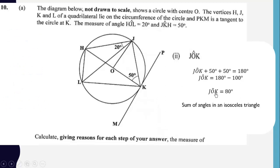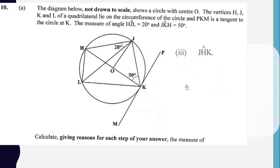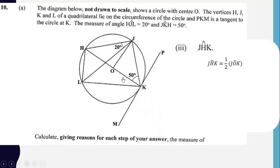The third part asks for angle GHK. This angle is created by the same arc JK that creates angle JOK at the center. Hence angle JHK is half of angle JOK. Since angle JOK is 80 degrees, angle GHK is half of that, which is 40 degrees.